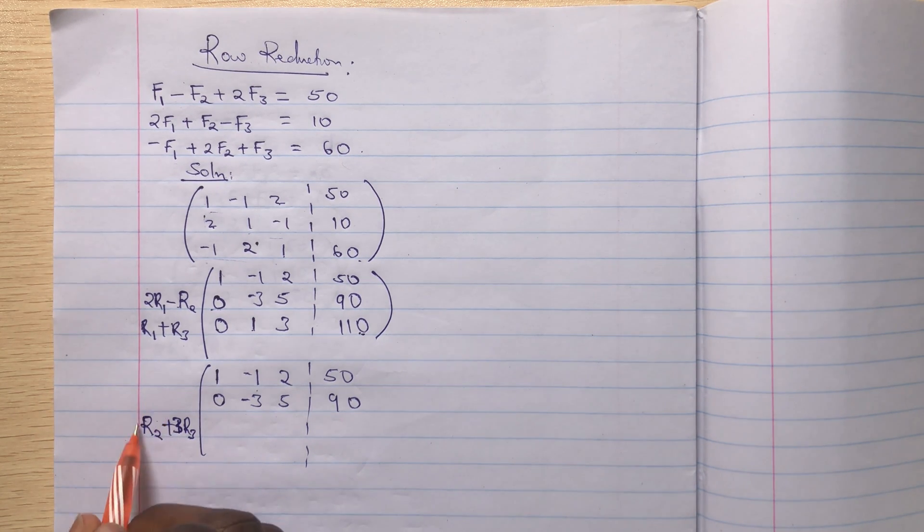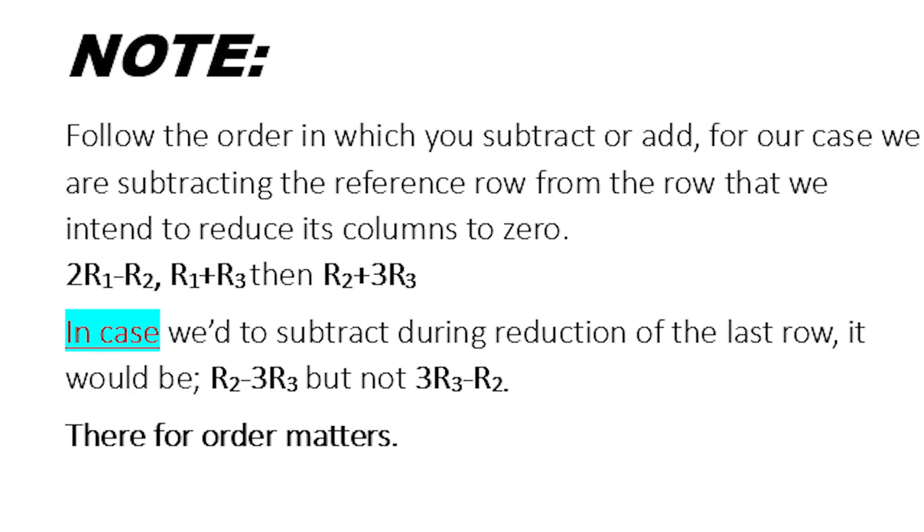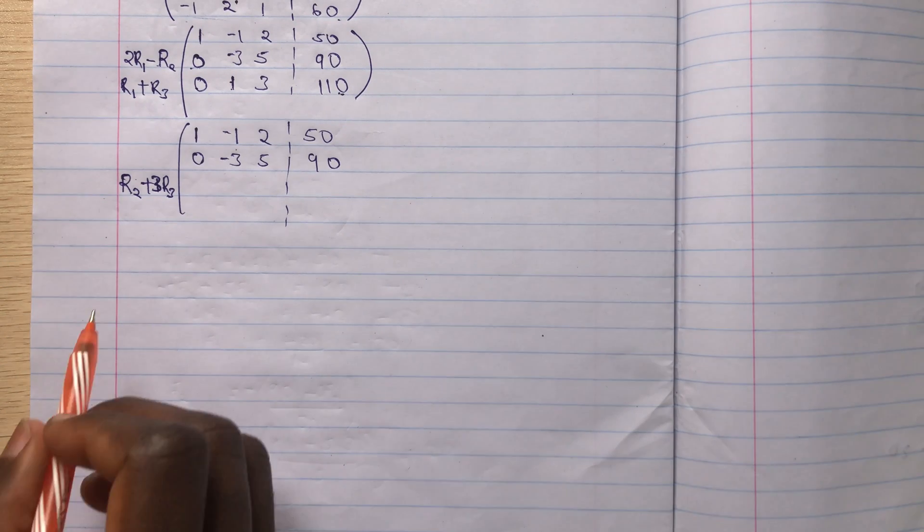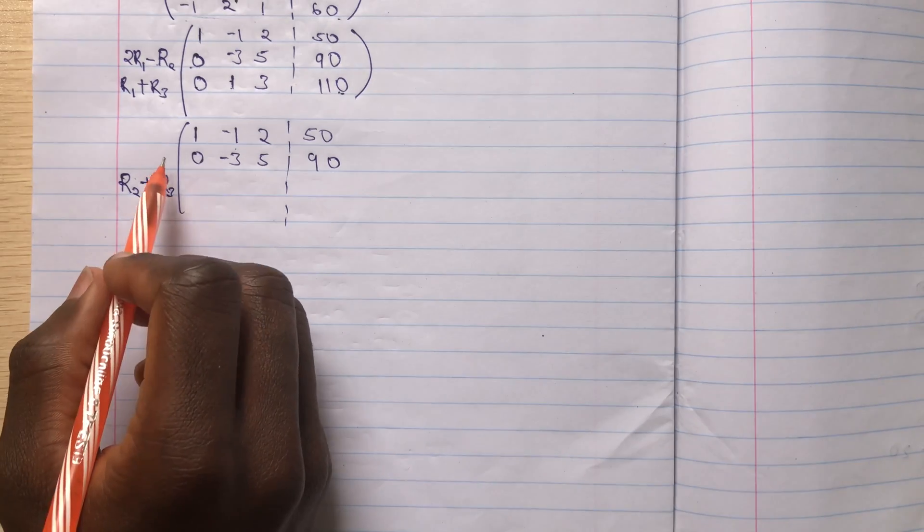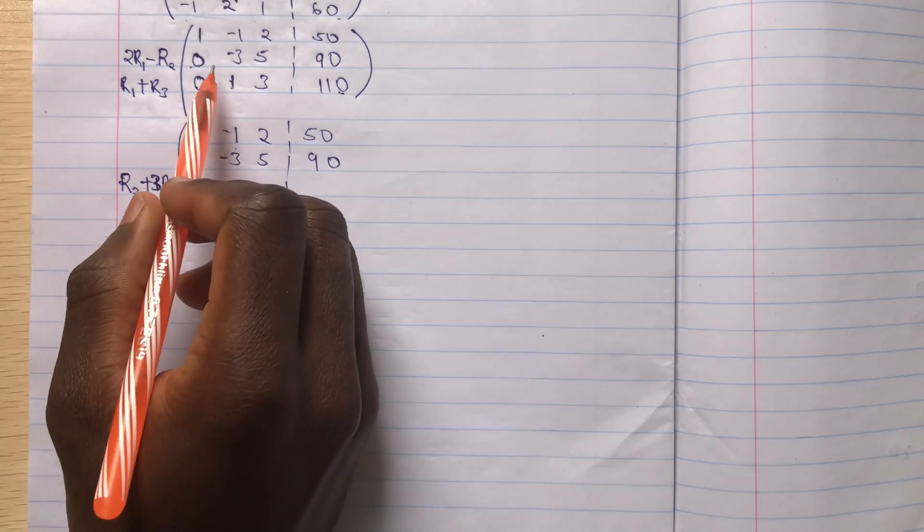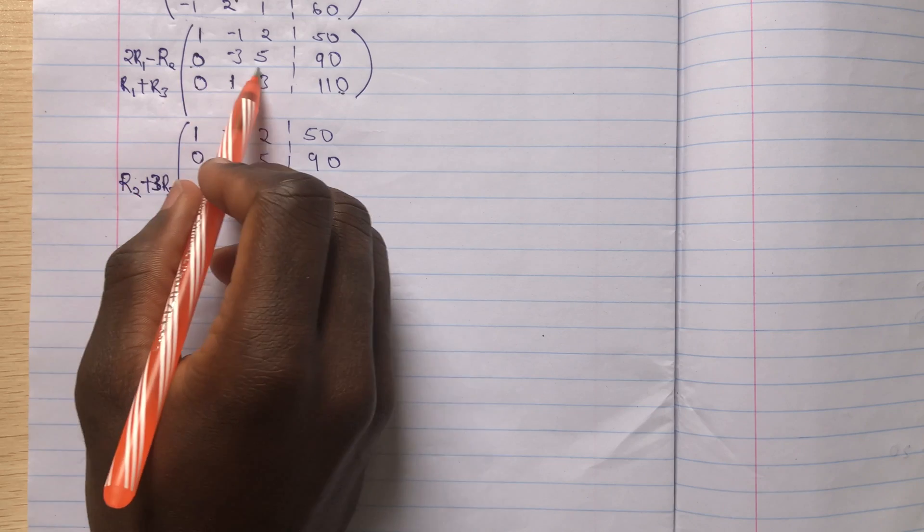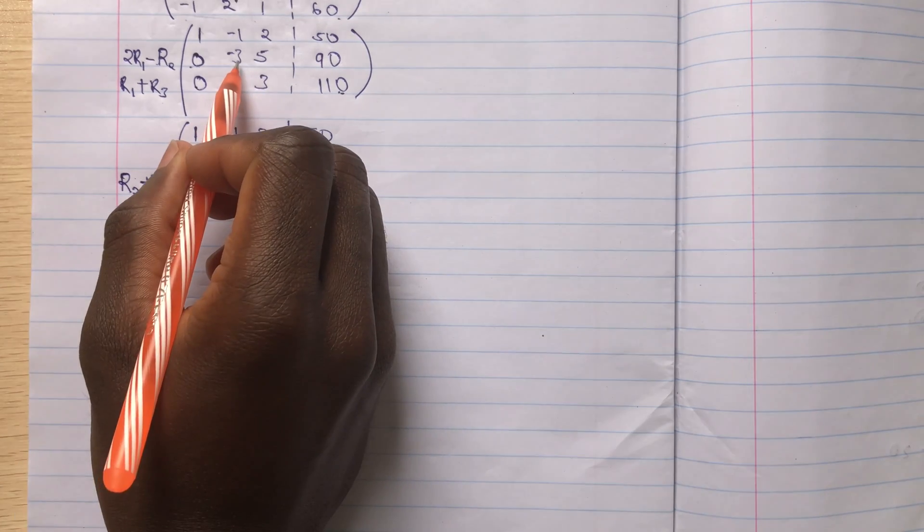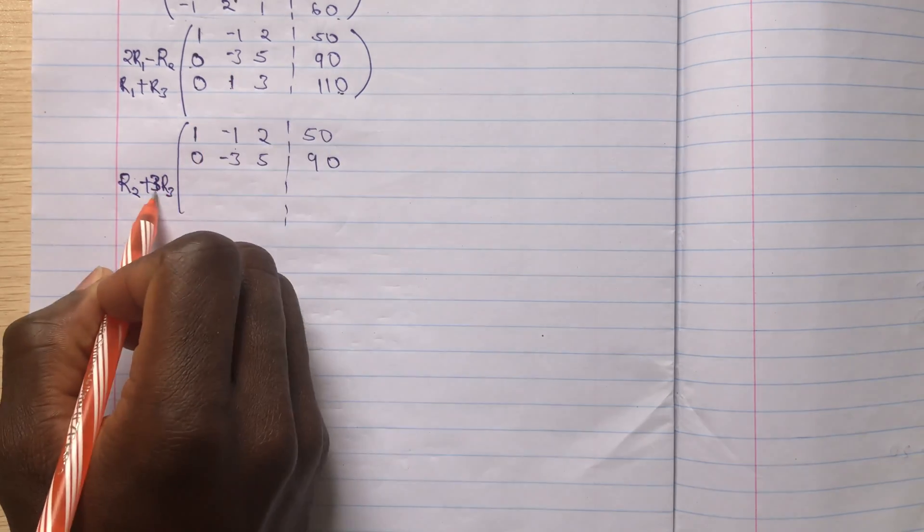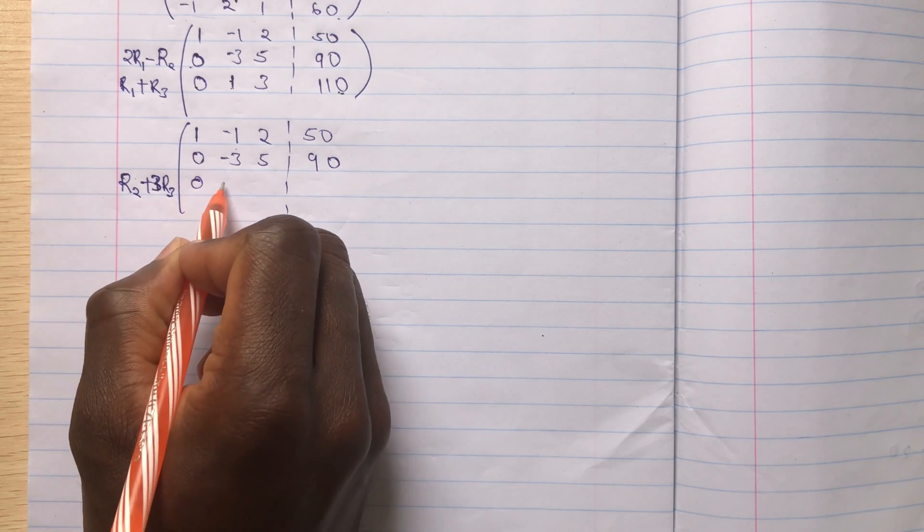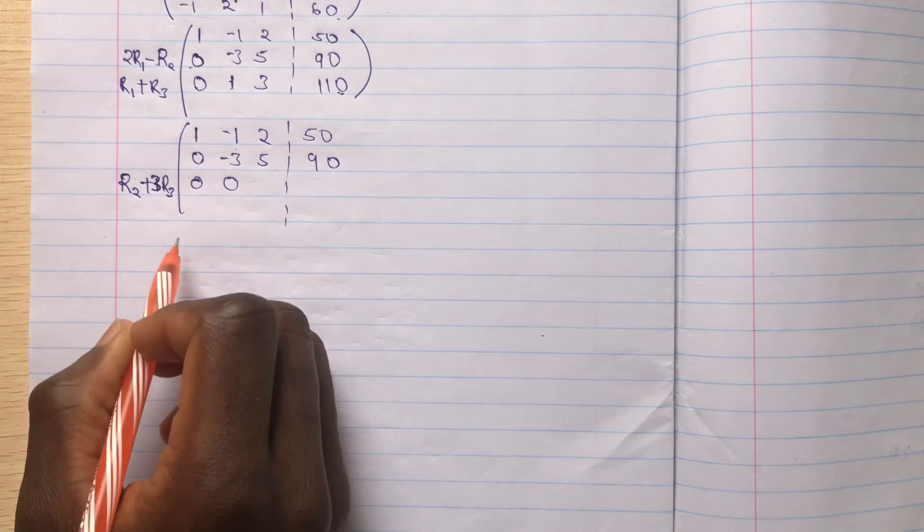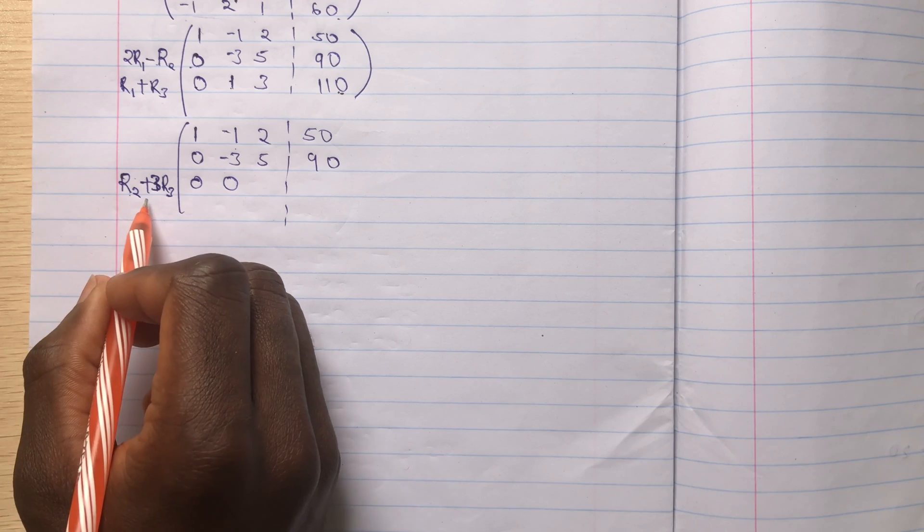So don't change the order here. So I'll have rho 2 as this row. So I'll have negative 3 plus 1 times 3, that is 0. So this is 0.